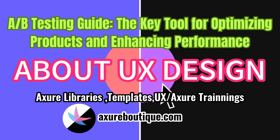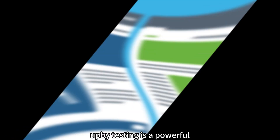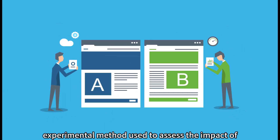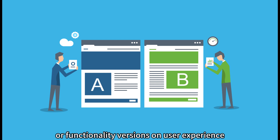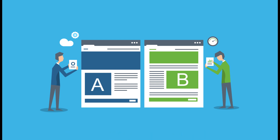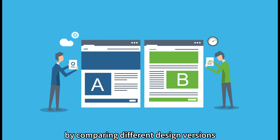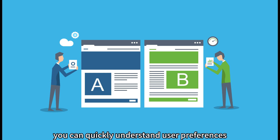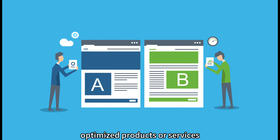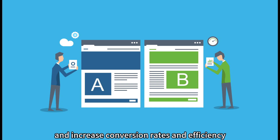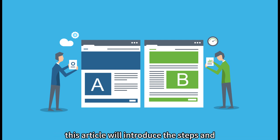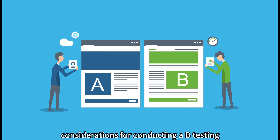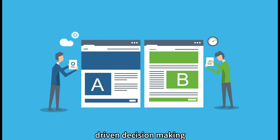A-B Testing Guide: the key tool for optimizing products and enhancing performance. A-B Testing is a powerful experimental method used to assess the impact of different designs or functionality versions on user experience and business performance. By comparing different design versions, you can quickly understand user preferences, optimize products or services, and increase conversion rates and efficiency. This article will introduce the steps and considerations for conducting A-B Testing, helping you achieve success in data-driven decision-making.